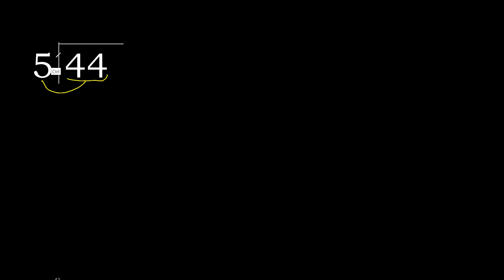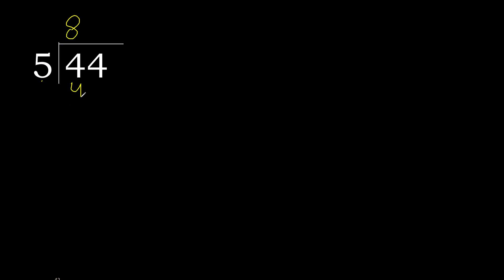5 multiplied by which number is nearest to 44, but not greater? 5 multiplied by 9 is 45 — 45 is greater. 5 multiplied by 8 is 40. 40 is not greater.